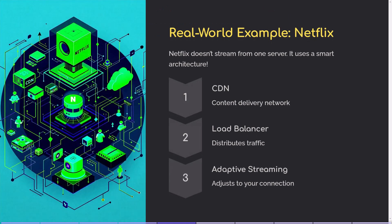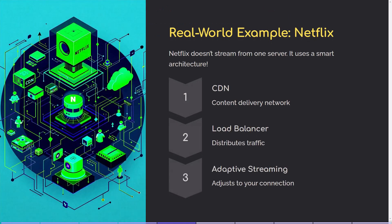Let's take Netflix as an example. When you press play, Netflix doesn't just stream directly from one giant computer — that would be way too slow and crash instantly if millions of people did it at once. Instead, technical architects at Netflix designed a system that stores copies of videos across different regions so they load faster for you, uses load balancing to spread traffic across multiple servers (think of it like traffic cops directing cars to avoid jams), and optimizes video quality based on your internet speed so you don't buffer every five seconds. They made sure the whole system is fast, scalable, and reliable.